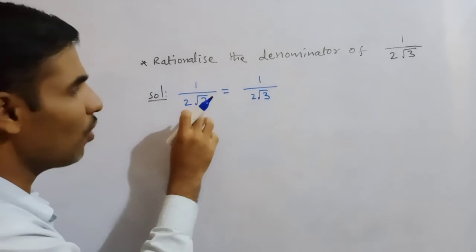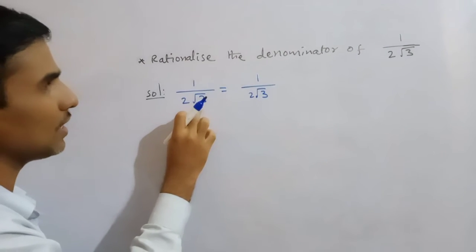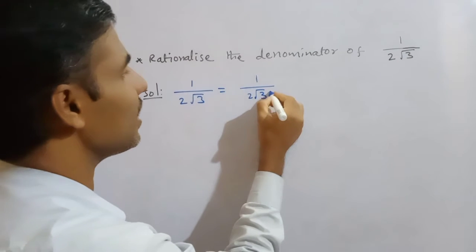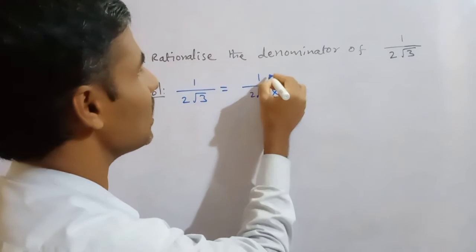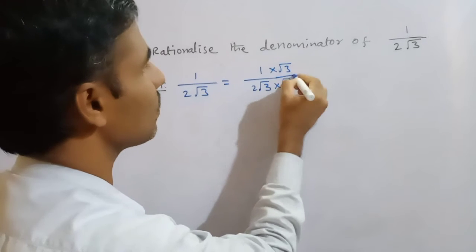Just we have to multiply and divide with root 3. So here I am taking here into root 3, here also into root 3. Okay.